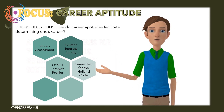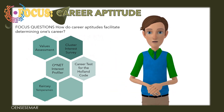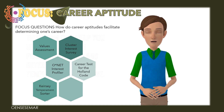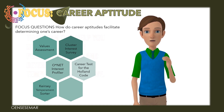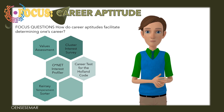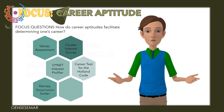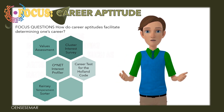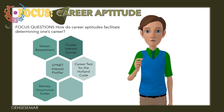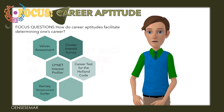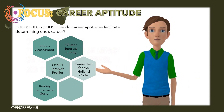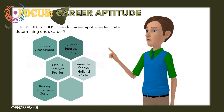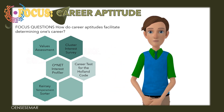Keirsey Temperament Sorter: This exam can help you understand your personality type and determine your temperament. The test findings indicate a dominant personality type, such as artisan, guardian, rational, or idealist. Your temperament has an impact on your work happiness, job search techniques, and job performance.